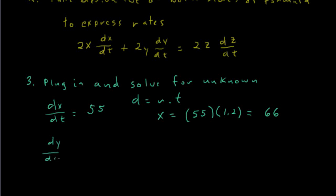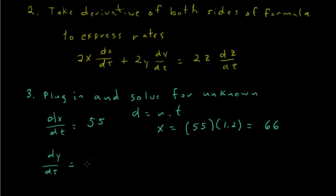And what's dy/dt? Well, that's the speed of car Y, which was 65 miles per hour. And the distance it travels will be 65 miles per hour times 1.2 hours, and we come up with 78 miles.